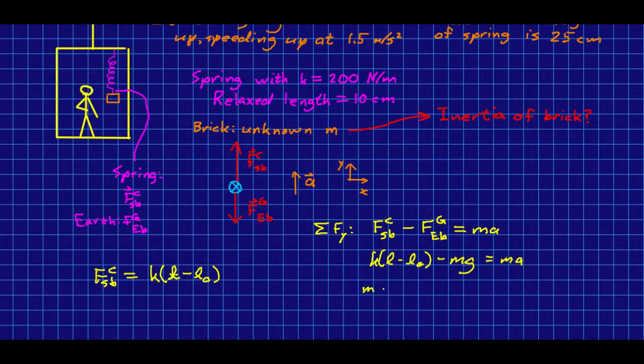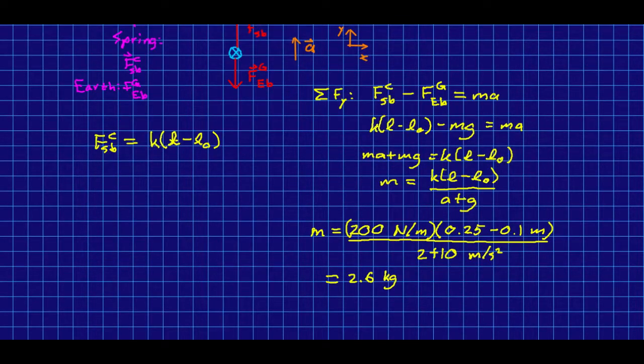I have solved it for M, and put in the numbers, being careful to use meters for the spring lengths. And I've got an answer of 2.6 kilograms, which I think is in kilograms, but let me check the units. I've got newtons per meter, times meters, all over meters per second squared. So these meters take out these meters, and a newton is a kilogram meter per second squared. And so I've got that over meter per second squared. And the meters per second squareds take each other out, and I have kilograms as I should.